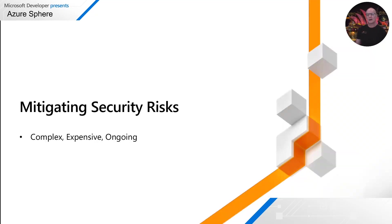I want to talk about approaches to mitigating security risks. Getting security right is complex, it's expensive, but more importantly it's ongoing, and attack vectors are constantly changing. Microsoft has a long history of building secure internet-connected systems and devices. Clearly some of that has been challenged and we have learned a lot of lessons, and it's those lessons we're applying to Azure Sphere.